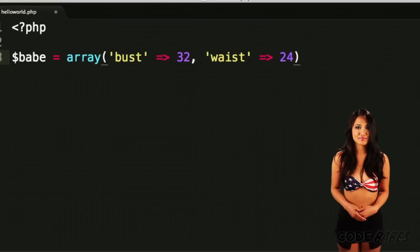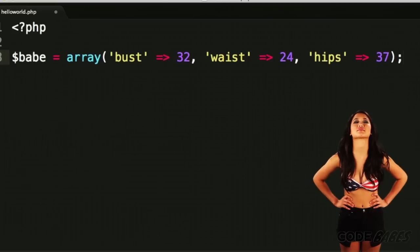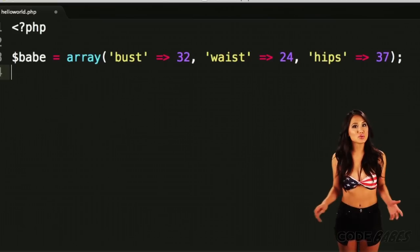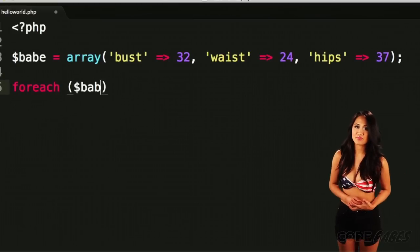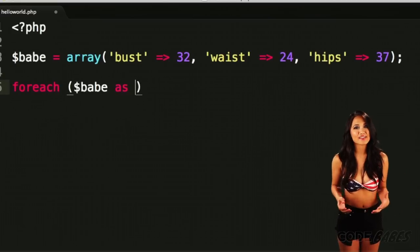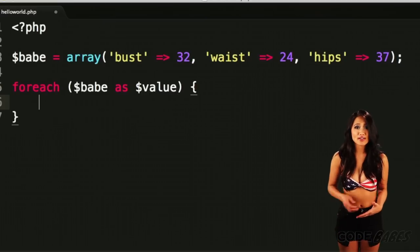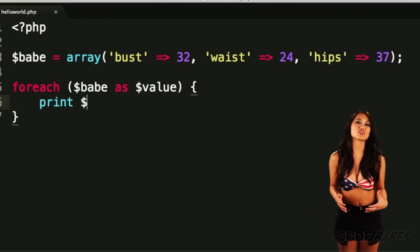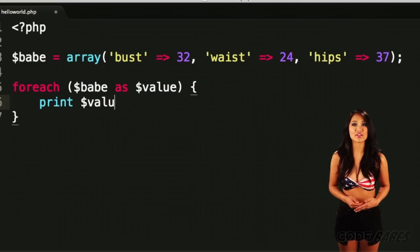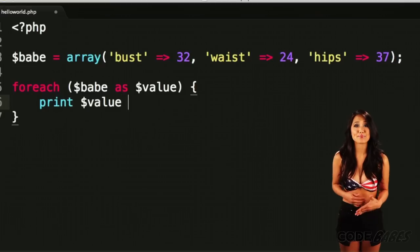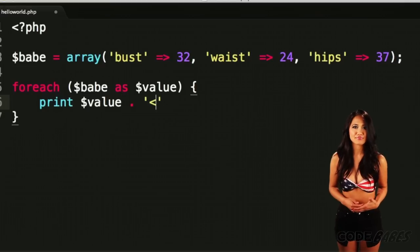Let's go back to our babe array from the last lesson. Next we'll put the for each keyword, then babe, the keyword as, then value. Slap on a set of braces, and inside those put print value and add a br tag for good measure.